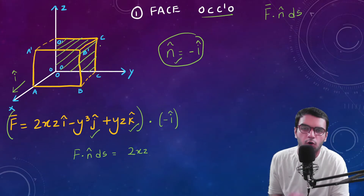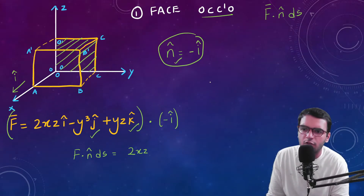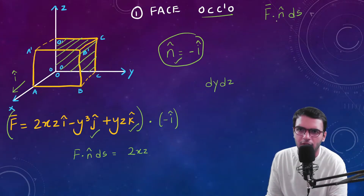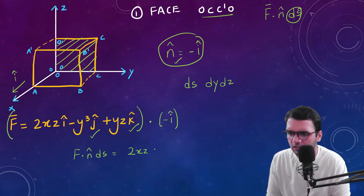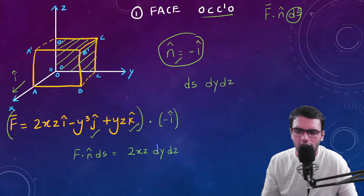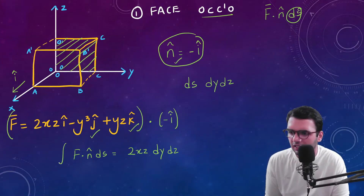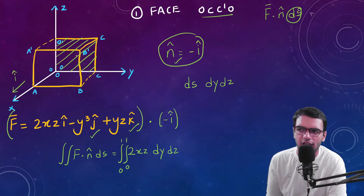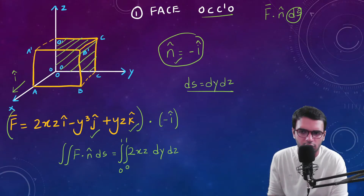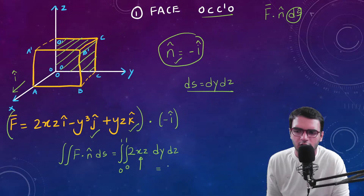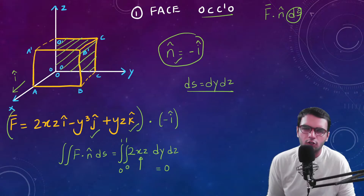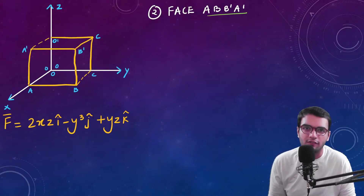On this back face, y is varying and z is varying, so dS equals dy dz. Integrating from 0 to 1 in both y and z, but on this surface x equals 0, so everything becomes 0. The total answer for the back face is 0.